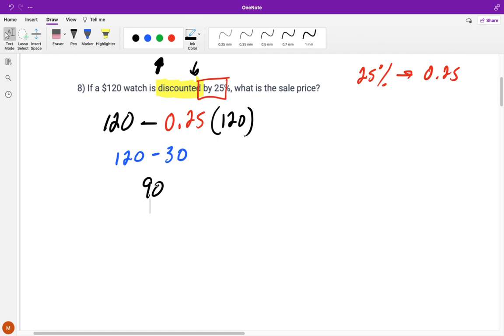120 minus 30 is 90. So that is one way that we can do this. We can figure out individually or separately what 25% is of that watch. So 120, and that's $30. And since it's being discounted, we're subtracting it. So that means we're going to pay $90.